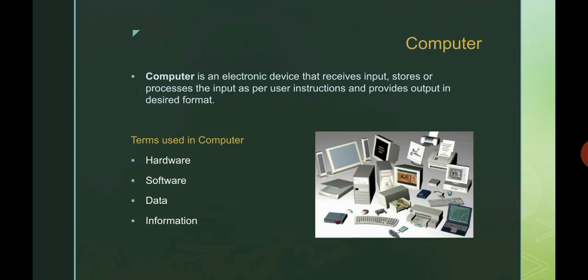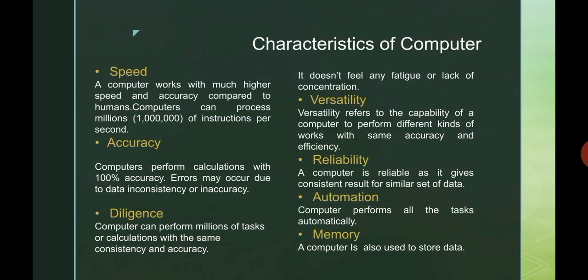The third term is data. As we all know, data is content which doesn't have meaning. We can also say raw facts are known as data. Last one is information. Information is all those contents which have meaning.